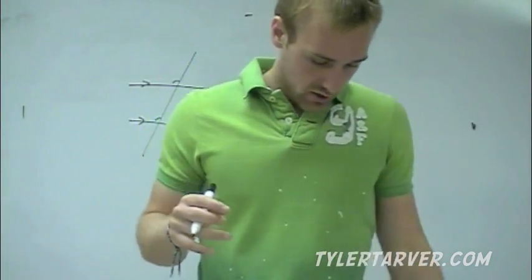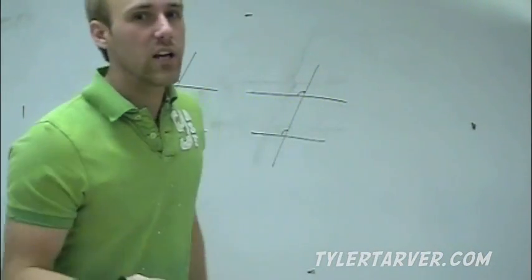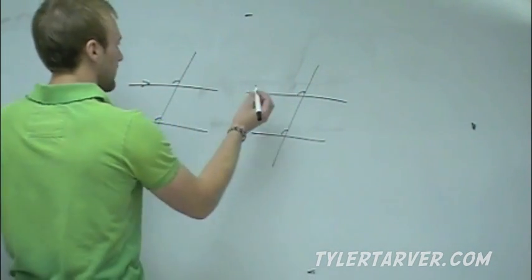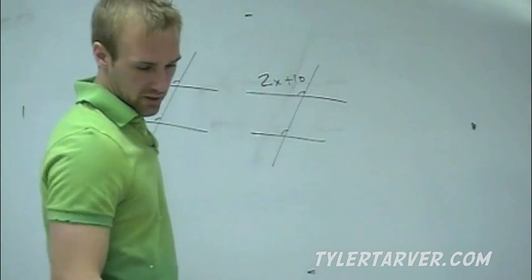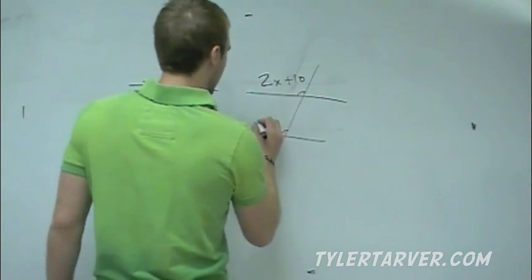Super duper. So if they're congruent, the way you would do a problem is, like, let's say one of the angles is 2x plus 10, and the other angle is 3x minus 75.